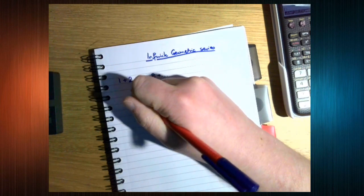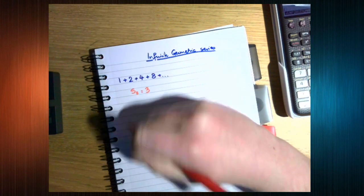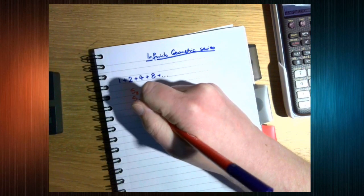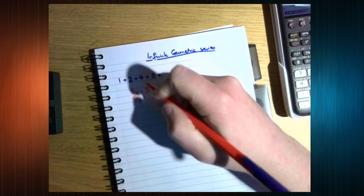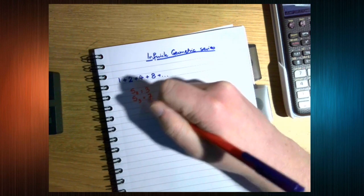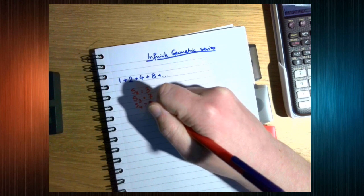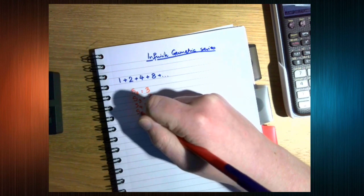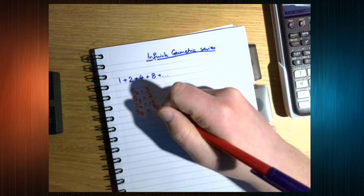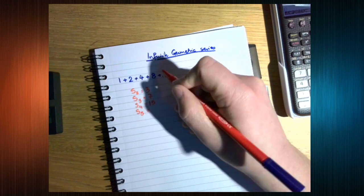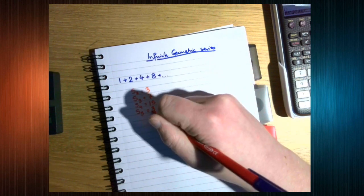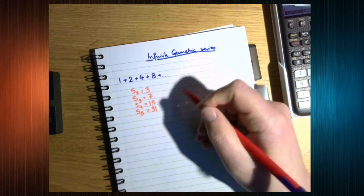So the sum of the first two terms is 3, the sum of the first three terms is 7, the sum of the first four terms is 15, the sum of the first five terms is going to be 31. What's happening here?